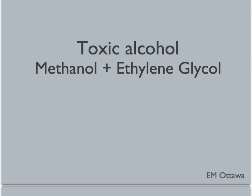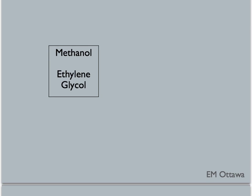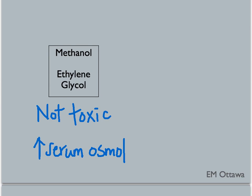Next, we will discuss toxic alcohols. There are two specific ones we are interested in: methanol and ethylene glycol. These two toxic alcohols share some interesting common properties. The parent compounds — the alcohols themselves — are not toxic. When they are in the bloodstream, measuring serum osmolality will show an increase based on the parent compounds. As our body tries to metabolize these two alcohols, they become acids.